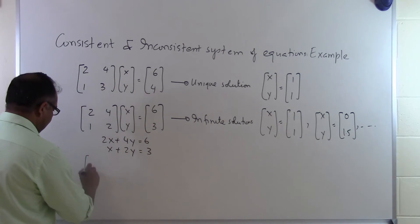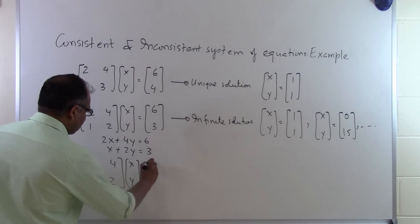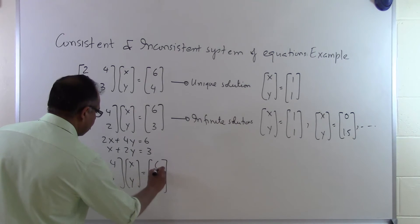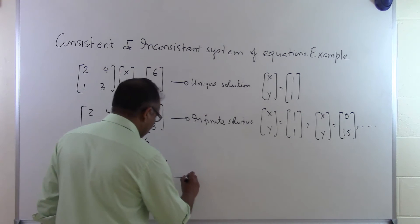Let's look at another set of equations. Let's suppose I have the same thing, the matrix [2, 4; 1, 2] times [x; y] equals [6; 2]. And in this case I will have no solution.